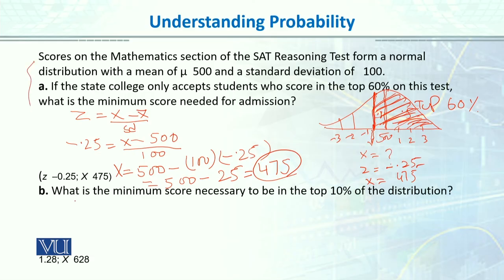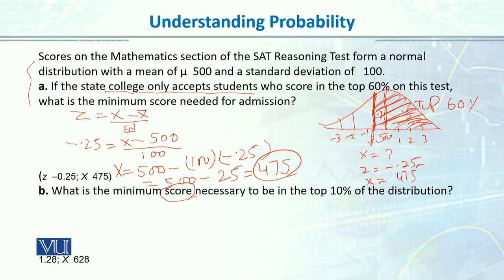Similarly, let's do one more example: what is the minimum score necessary to be in the top 10% of the distribution? Suppose the same college gives scholarships to the top 10%, and you wanted to know what the minimum score is to be in that top 10% and receive the scholarship. The step is the same — first, draw the normal distribution.